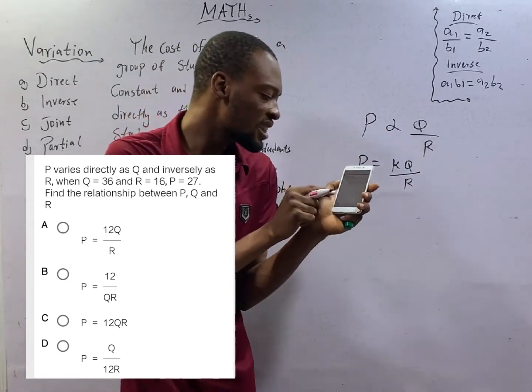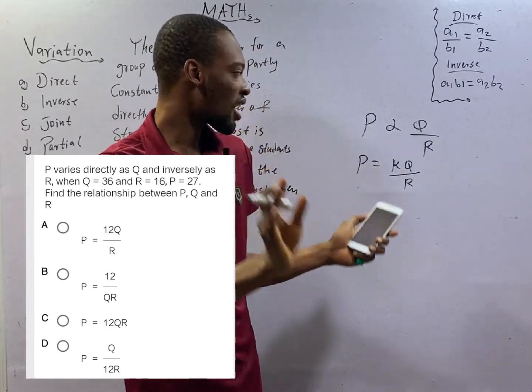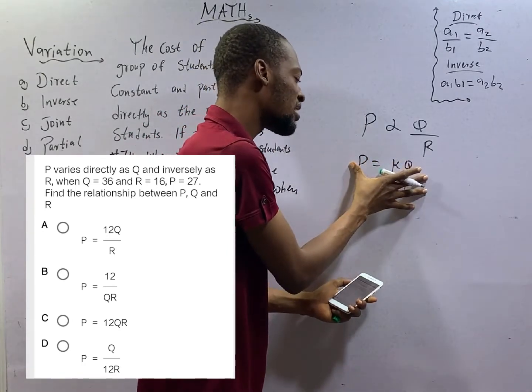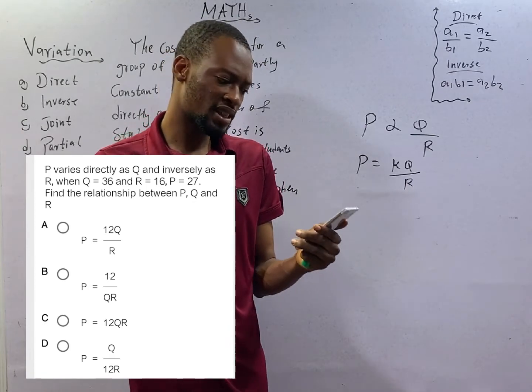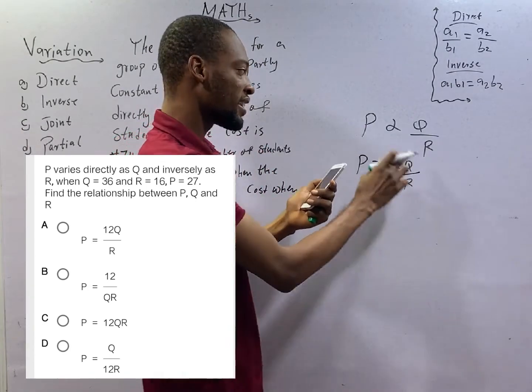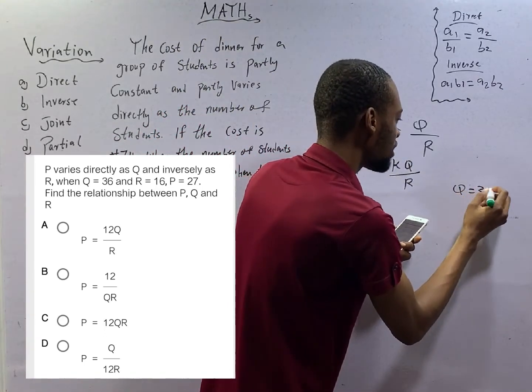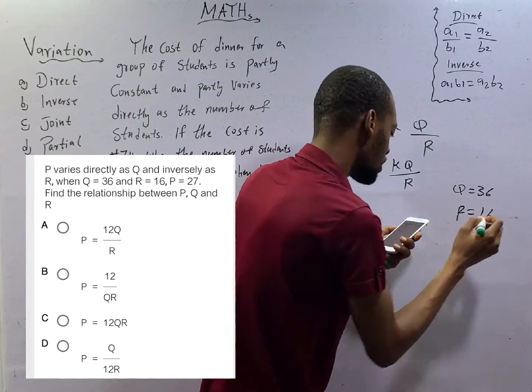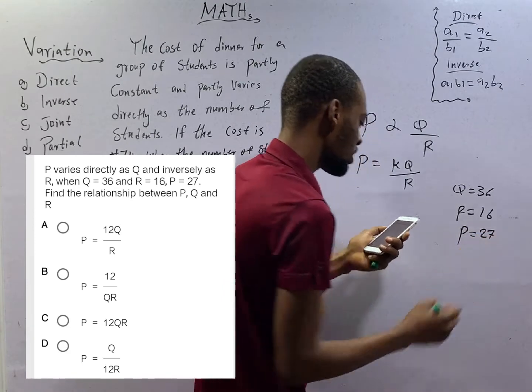What they did here, they looked for the value of proportionality constant, and they substituted the value of proportionality constant here, while every other thing remains the same. The good news about this question is that they already gave us the values we need to find K. We are told that Q is 36, R is 16, P is 27.